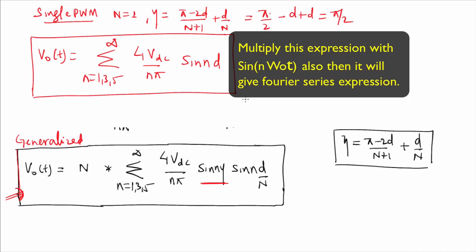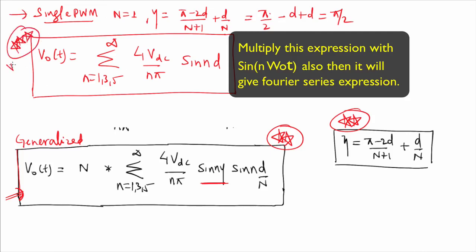In most books, the Fourier series expression of single PWM is derived separately, but the multiple PWM expression is not derived. If you know the Fourier series expression of multiple PWM, you don't need to memorize the single PWM expression — just put N = 1 and you get every parameter. You just need to understand how this is derived and why we are finding gamma.